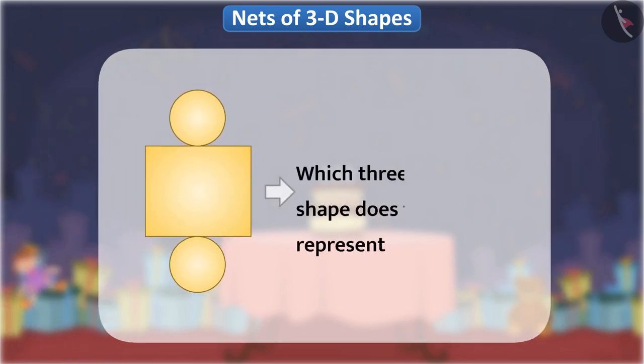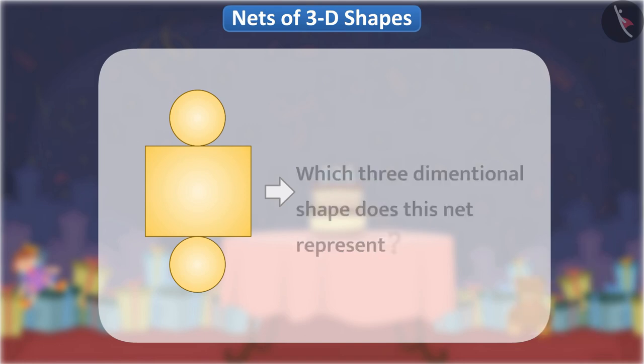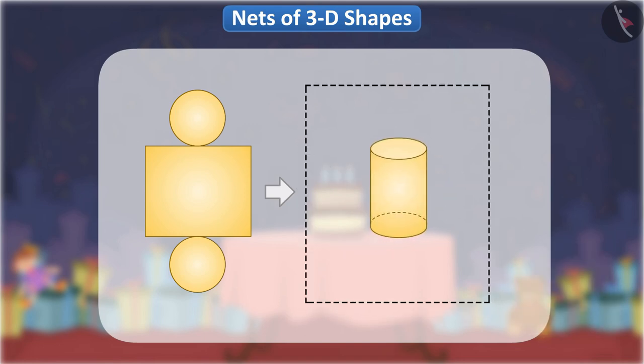Which three dimensional shape does this net represent? Think, think, think. Absolutely right! This net is of a cylinder.